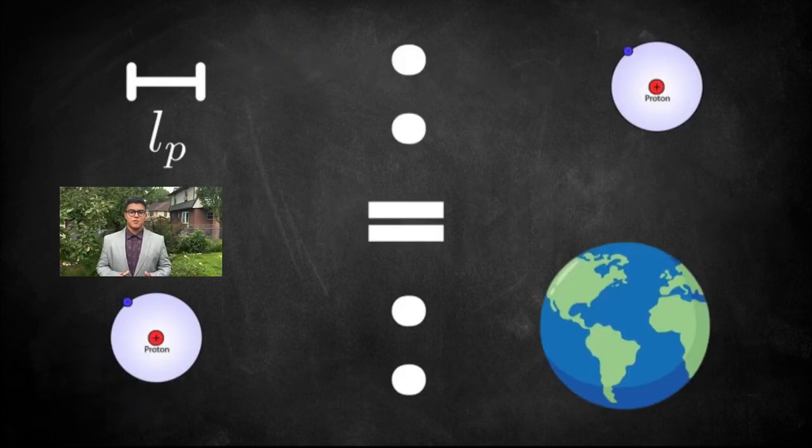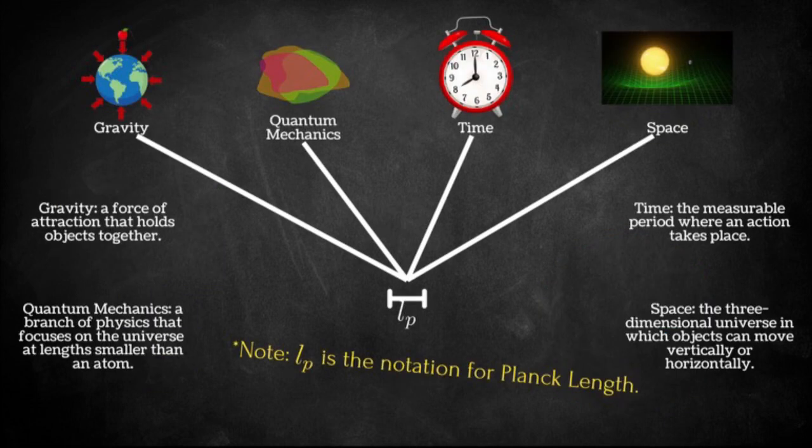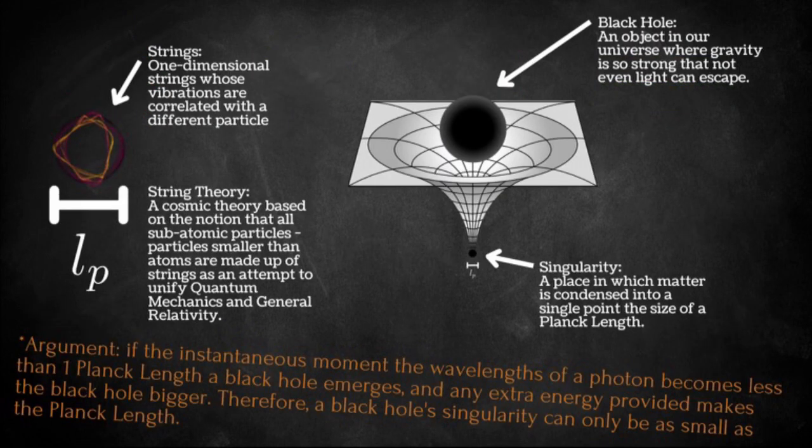The Planck length is so small that one Planck length to an atom is equivalent to an atom compared to Earth. The Planck length defines the meeting point of gravity, quantum mechanics, time, and space.